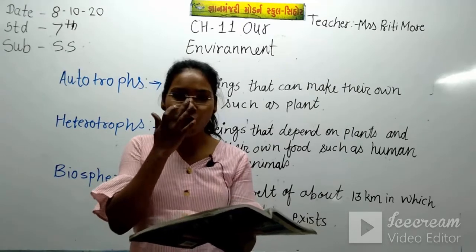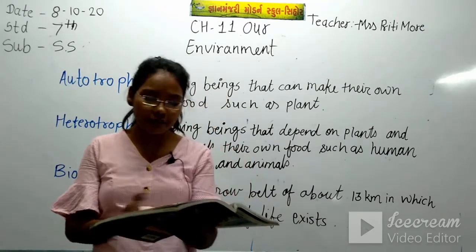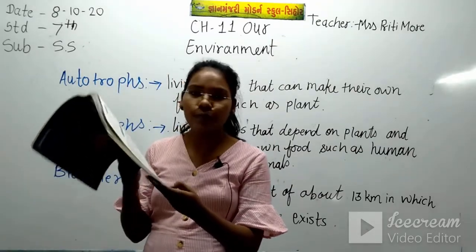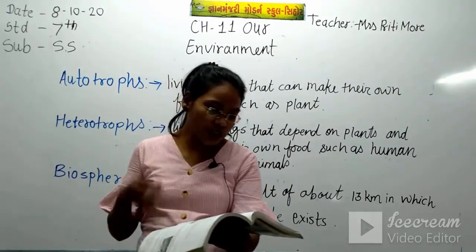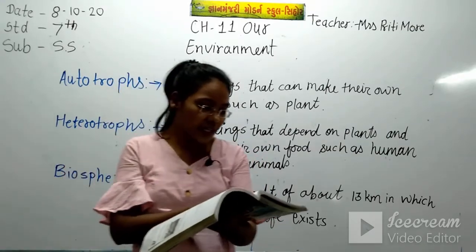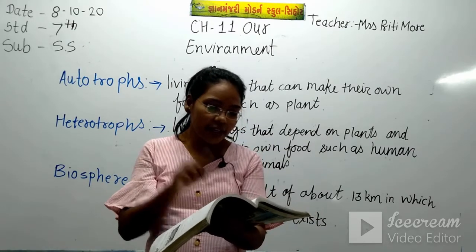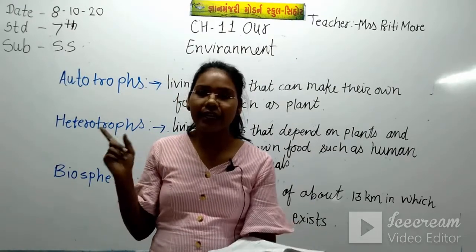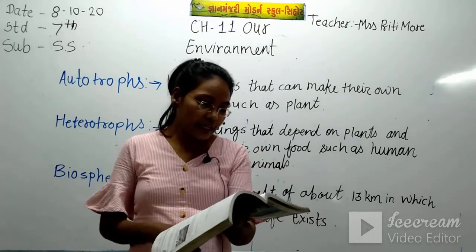I hope students you got all the main points of this lesson. Now the exercise is on page number 114 - fill in the blanks with appropriate words. Let's take this exercise orally. Question A: The environment comprises land, blank space, and air. The answer is water. The environment comprises land, water, and air.